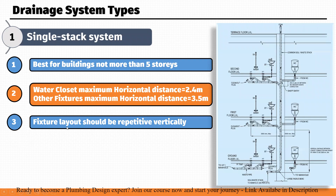The fourth point is that the fixture layout should be repetitive vertically. This means the building should have a typical, repeated plumbing layout, with washrooms positioned on the same location on each floor.